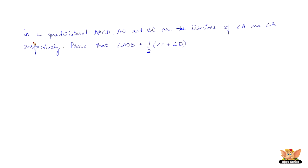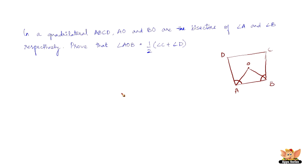Let us quickly solve another problem. In a quadrilateral ABCD, let us first draw the quadrilateral with vertices A, B, C, D. AO and BO are the bisectors of angle A and angle B respectively, meeting at point O. We need to prove that angle AOB equals half of the sum of angle C plus angle D.